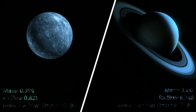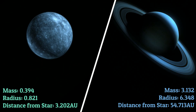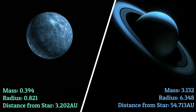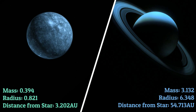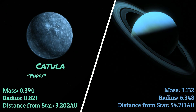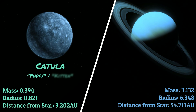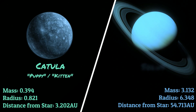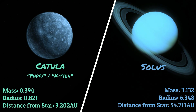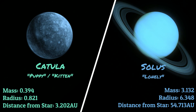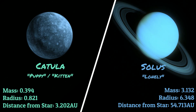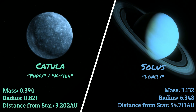Let's quickly make two more planets — one icy terrestrial and one icy gas dwarf. Both are going to have their values compared to Earth. Let's call the small icy terrestrial Catula, meaning puppy or kitten, and the icy gas dwarf Solus, meaning lonely, given how far away it is from every other planet in the system.